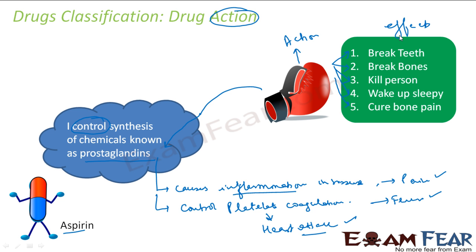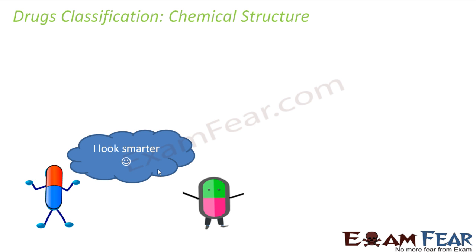So till now we have seen classification in two types: classify based on effects, and classify based on action. This particular one was to classify drugs based on the action performed. Here we go deep inside the chemistry and try to understand what kind of action this drug is doing. The next is based on the chemical structure.